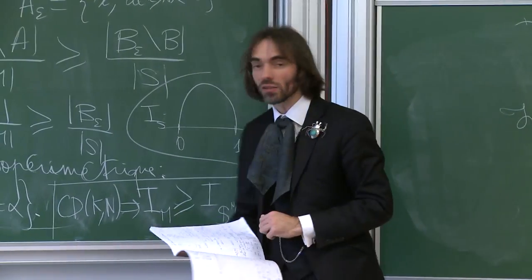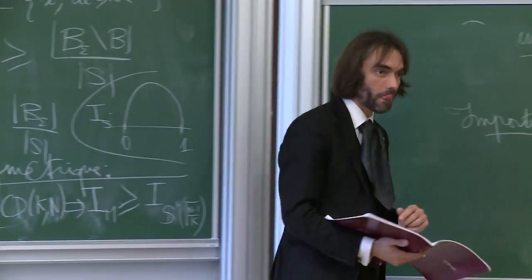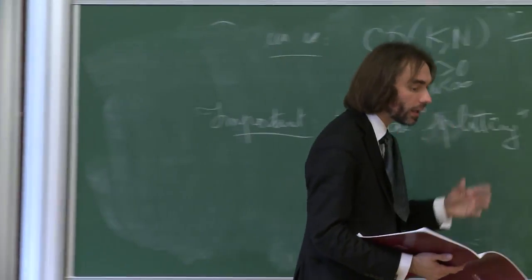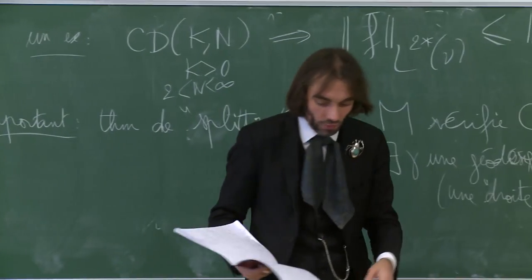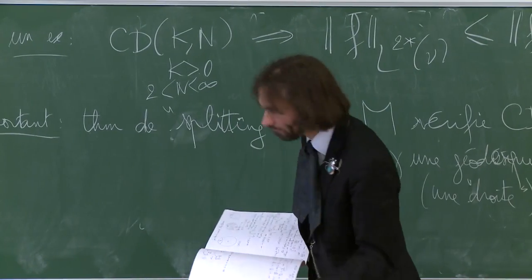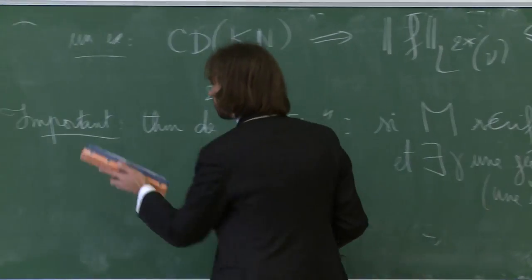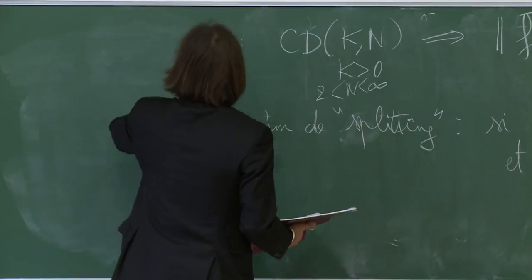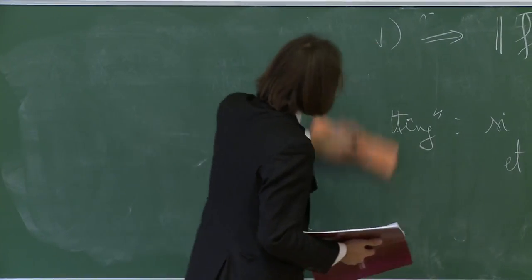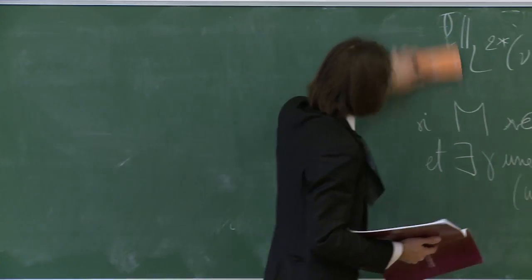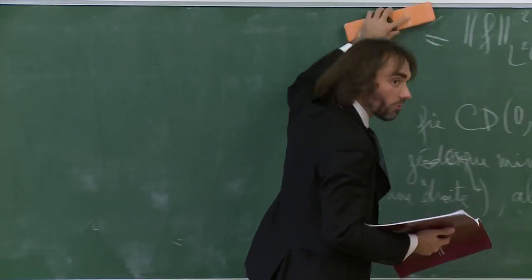La fonction isopérimétrique est une fonction définie sur [0,1], valant 0 en 0 et en 1, qu'on peut calculer explicitement pour la sphère. On peut montrer qu'elle est concave. Lévy utilisait ce résultat pour démontrer des propriétés de concentration sur la sphère, puis en déduisait une concentration gaussienne en passant à la limite de grande dimension.